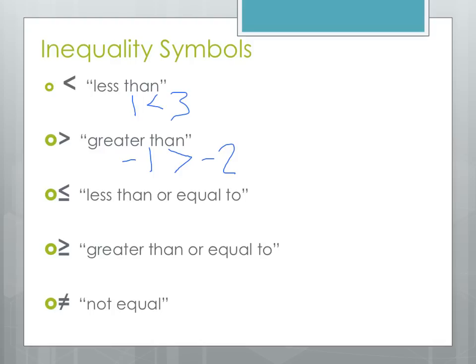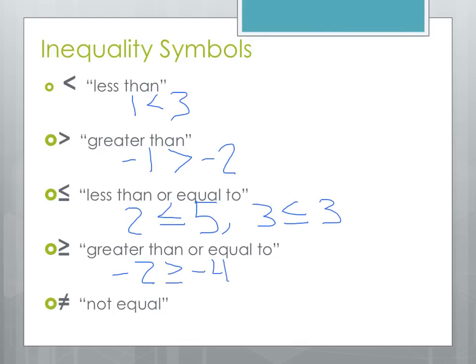The third symbol is less than or equal to, which means the number on the right is either greater than or equal to the number on the left. So we might have 2 is less than or equal to 5 — that's a true statement. We could also have 3 is less than or equal to 3, because 3 is equal to 3, so it satisfies one of those conditions. Next is greater than or equal to — we could say negative 2 is greater than or equal to negative 4, or negative 2 is greater than or equal to negative 2, because both of those are true statements.